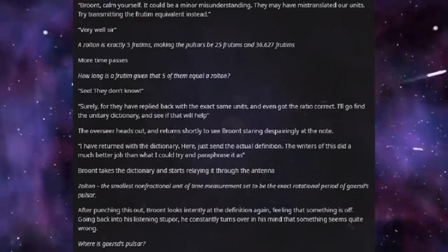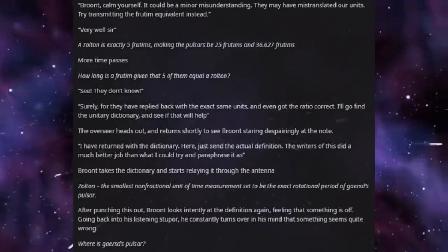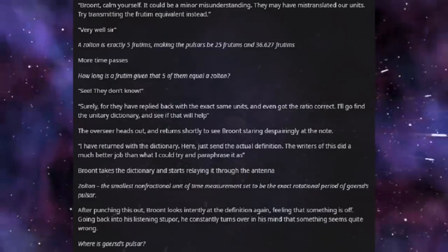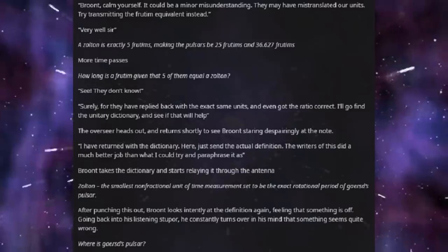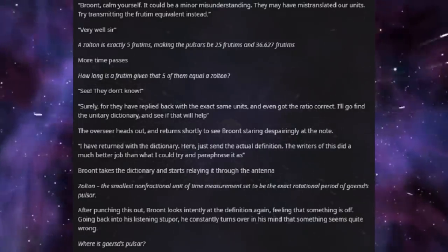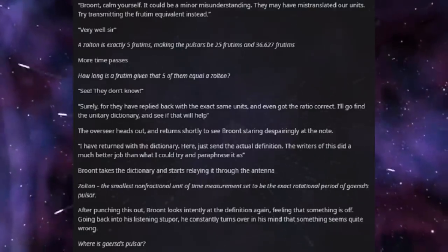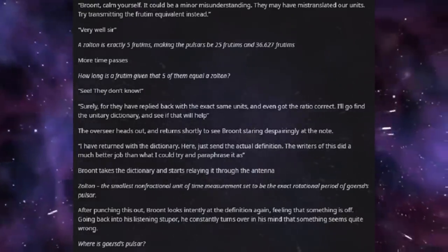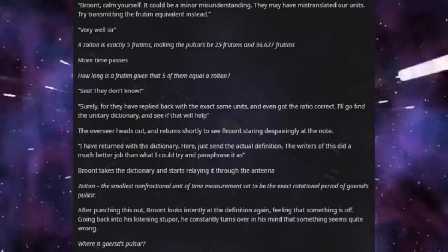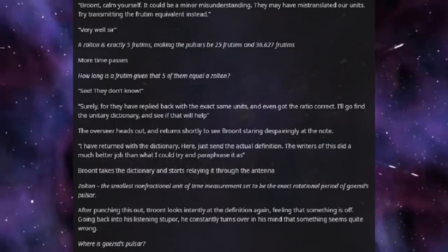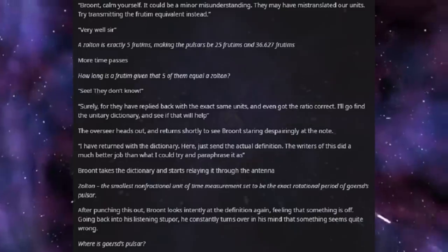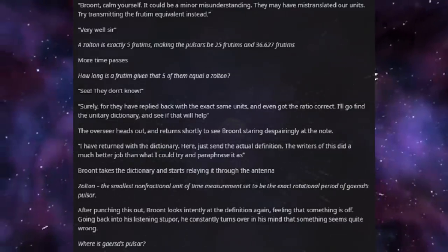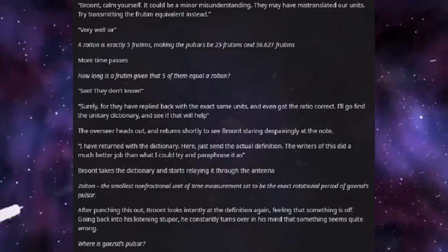Brundt, calm yourself. It could be a minor misunderstanding. They may have mistranslated our units. Try transmitting the Thruton equivalent instead. Very well, sir. A Zolton is exactly five Thrutons, making the pulsars be 25 Thrutons and 36.627 Thrutons. More time passes. How long is a Thruton given that five of them equal a Zolton? See? They don't know. Surely, for they have replied back with the exact same units, and even got the ratio correct. I'll go find the Unitary Dictionary and see if that will help.